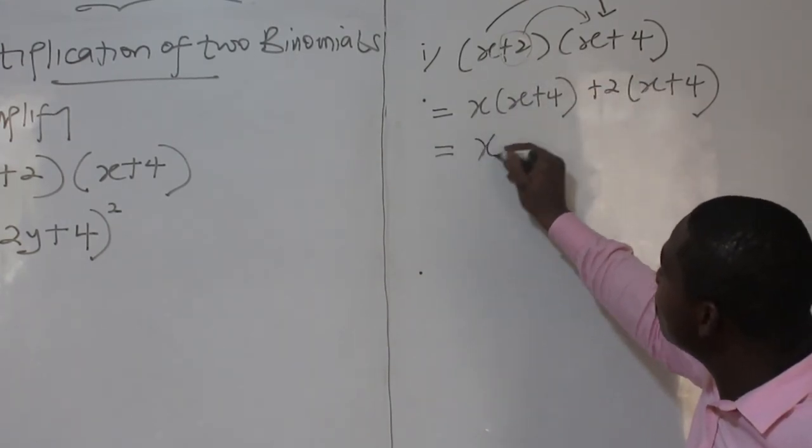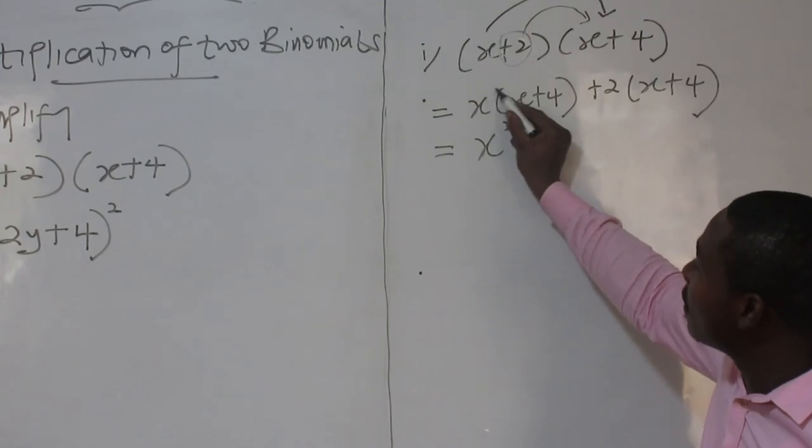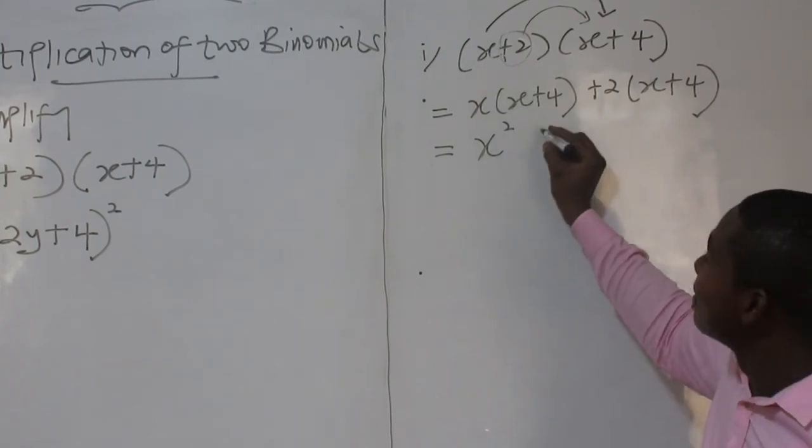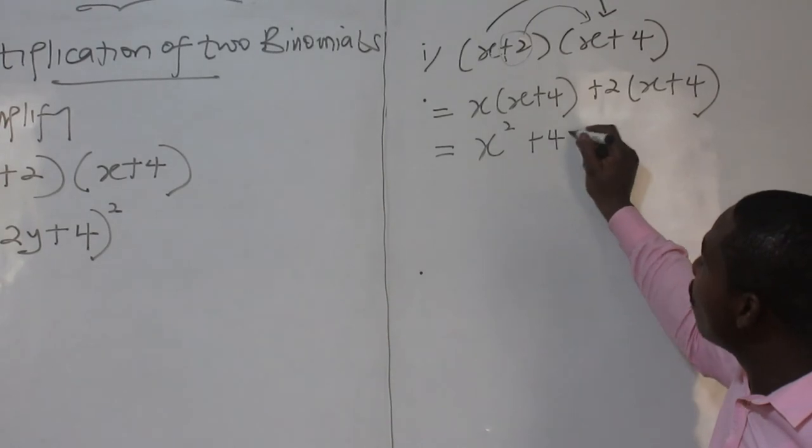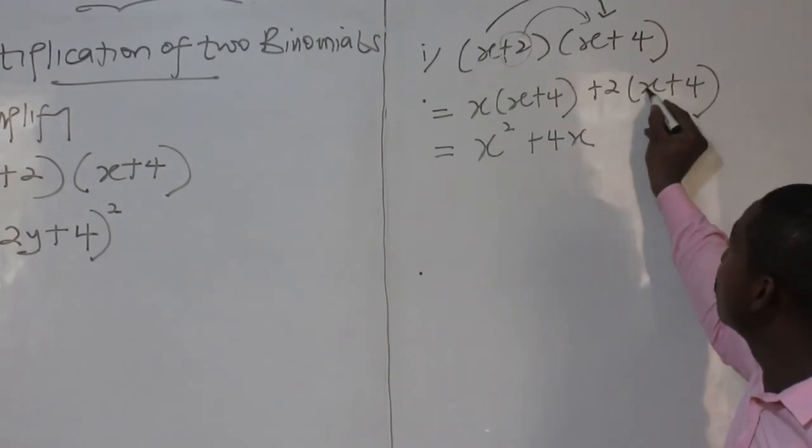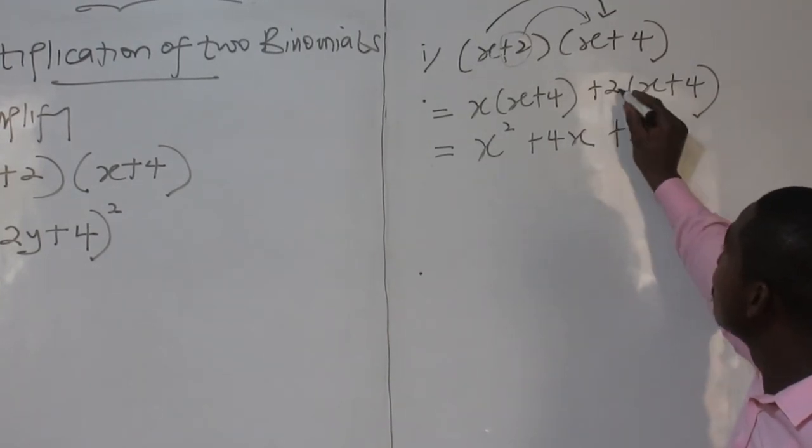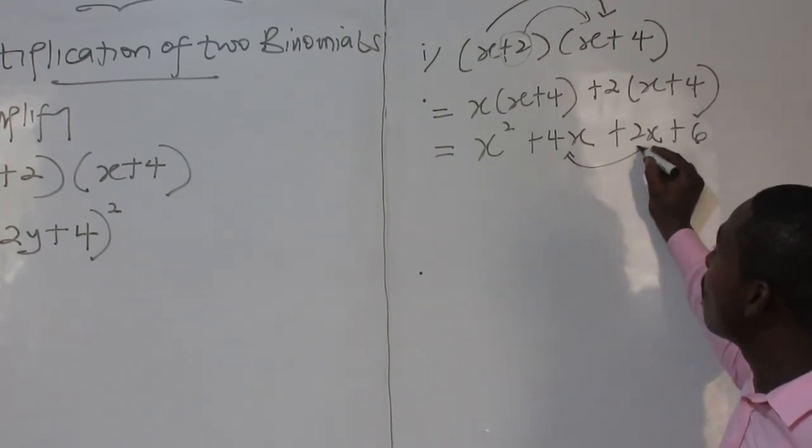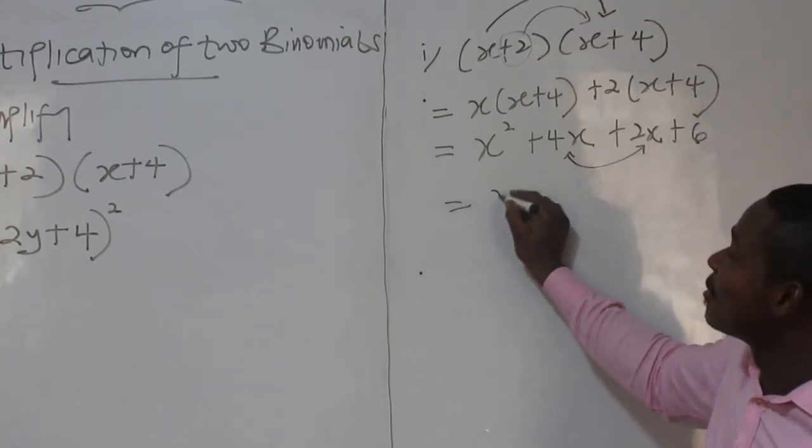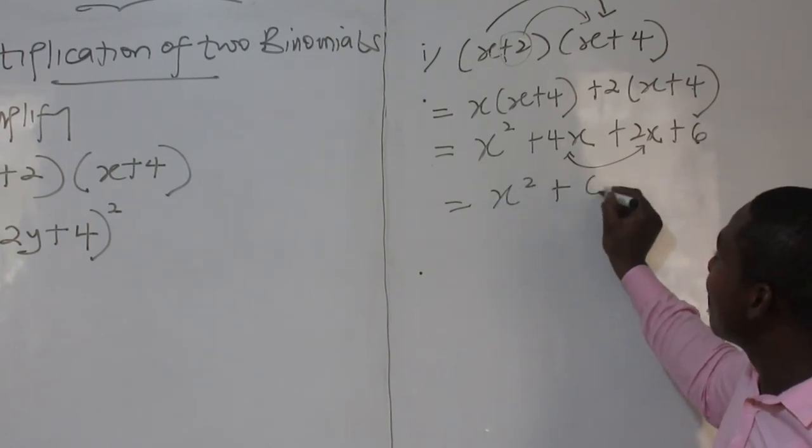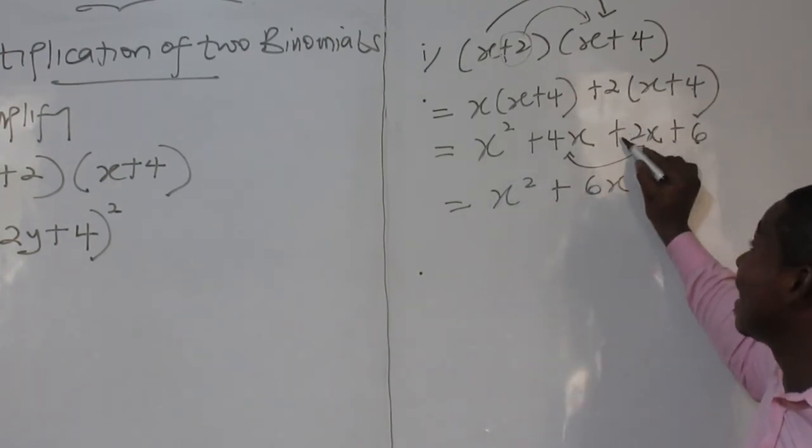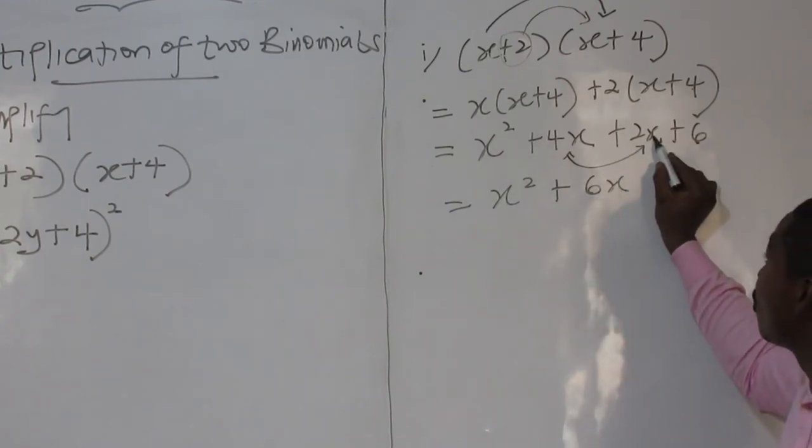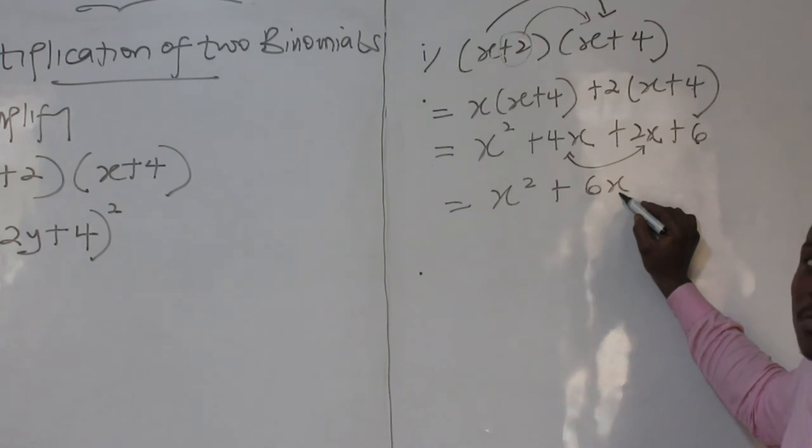So x by x will give me x squared. How did I know? x to the power 1, x to the power 1, indices, add powers, you get this. 4 by x is 4x. 2 times x is 2x. 2 plus 4 is 6. Now, this and this are also compatible, as you can see. So this is x squared plus 6x. Why 6x and not 6x squared? I am adding. I just have to make sure the variables have the same exponents. I am not multiplying.